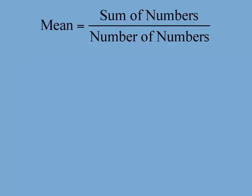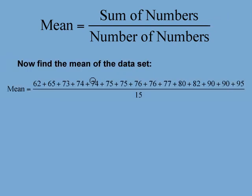Now let's find the mean. This is the formula for finding the mean. We add up the test scores and divide by the number of test scores as shown here. In the numerator are the 15 test scores; the denominator is 15, which represents the total number of scores. The sum of the test scores is 1164 divided by 15; the mean score is 77.6.